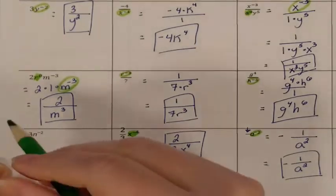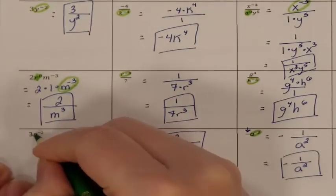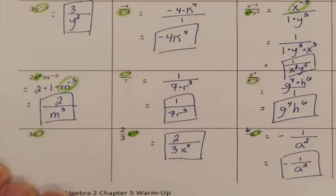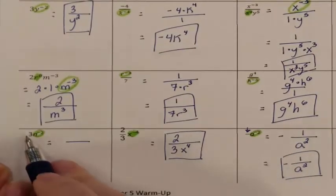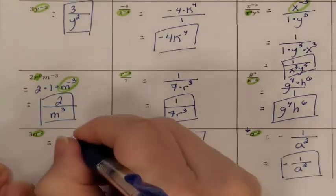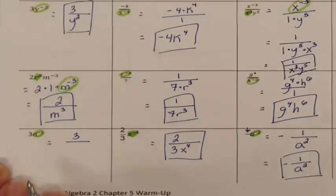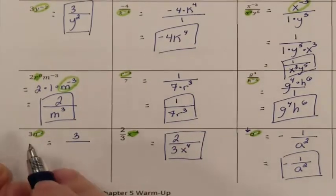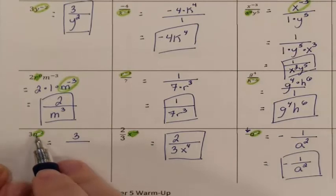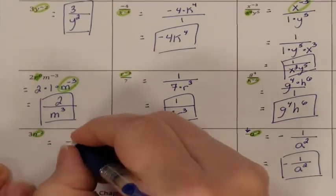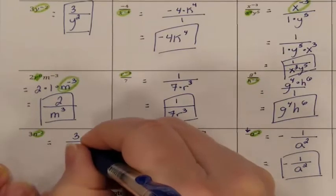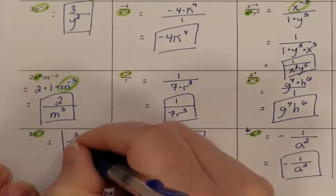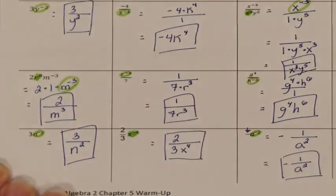Our very last problem. The n is the only thing affected by the negative exponent, so it's the only thing that moves. Here's my fraction bar: m was in the numerator and stays in the numerator because it has no negative exponent. The n was in the numerator and needs to move to the denominator — when it moves, you get a positive exponent. This is the final answer, and we are done.